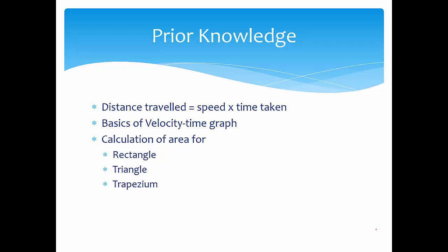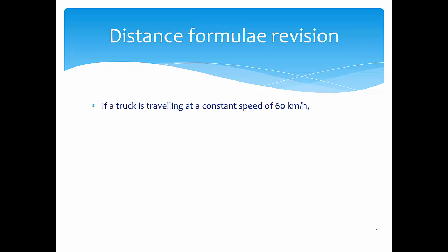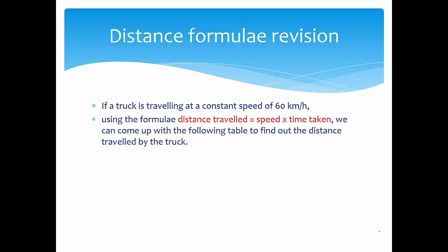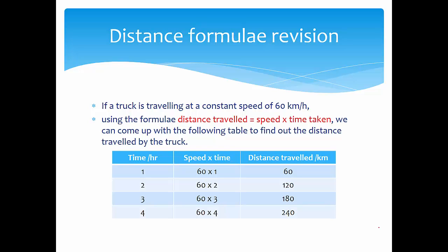These are some prior knowledge — just some revision. If a truck is travelling at a constant speed of 60 km per hour, using the formula distance equals speed multiplied by time taken, we can build a table: 1 hour gives 60 km, 2 hours gives 120 km, 3 hours gives 180 km, and 4 hours gives 240 km.